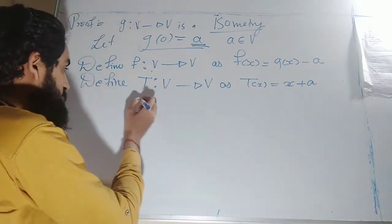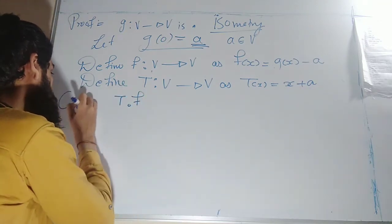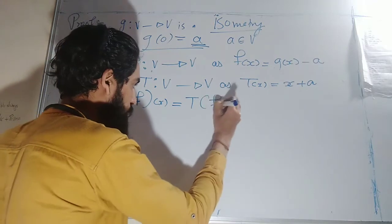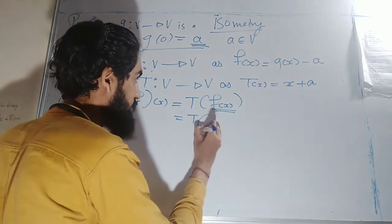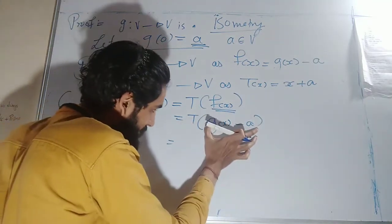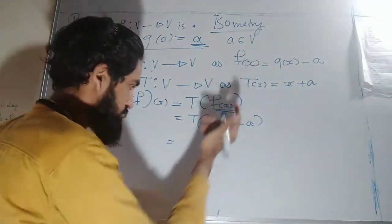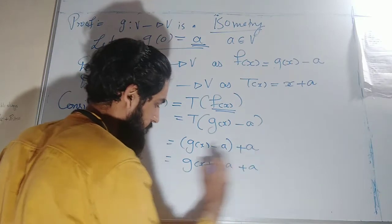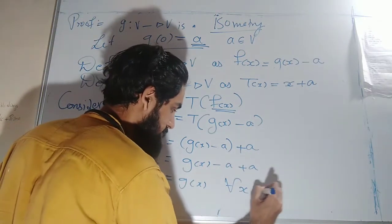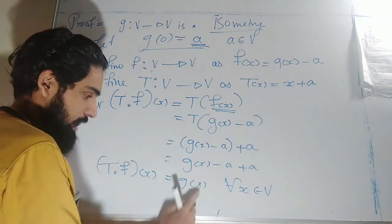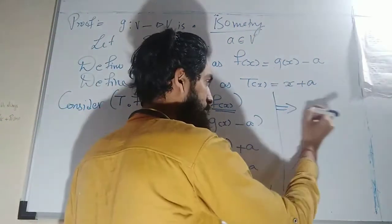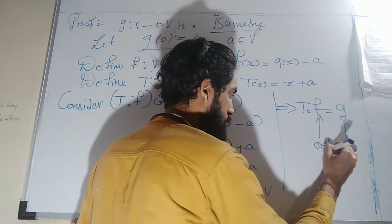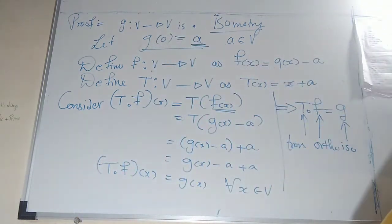Now I want to prove that g is nothing but the composition of f and t. Consider (t ∘ f)(x) = t(f(x)) = t(g(x) − a). Since t of anything just adds a to it, this equals (g(x) − a) + a = g(x). This is true for all x in V. Therefore t ∘ f = g, which means the isometry g is nothing but the composition of an orthogonal transformation and a translation. This completes the proof.